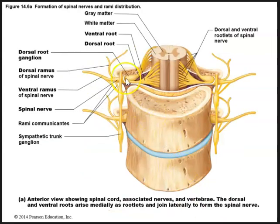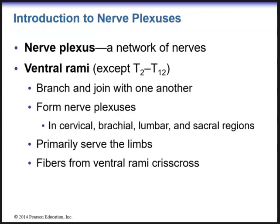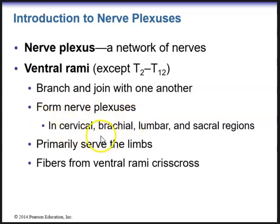This shows how the spinal nerves and the rami communicantes eventually form the sympathetic trunk ganglion. Now let's go through the different nerve plexuses. A nerve plexus is a network of nerves. Ventral rami, except for T2 and T12, will branch and join with one another to form nerve plexuses. We have nerve plexuses in the cervical, brachial, lumbar, and sacral regions that primarily serve the limbs, and fibers from the ventral rami will crisscross.